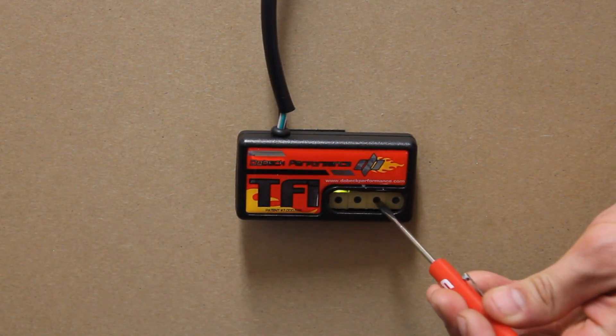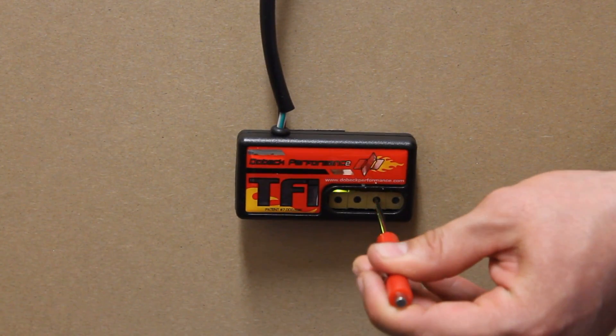And if I want to set my full throttle to nine, I turn my screw so the arrow points to nine o'clock.